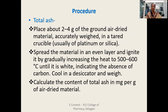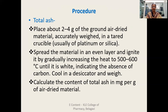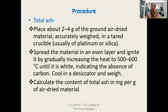To perform the total ash: take 2 to 4 grams of the ground, air-dried material and accurately weigh it in a tared crucible made of platinum or silica. Spread the material in an even layer and ignite it by gradually increasing the heat to 500 to 600 degrees centigrade until it is white, indicating the absence of carbon. Cool in a desiccator and weigh. Calculate the content of total ash in milligrams per gram of air-dried material.